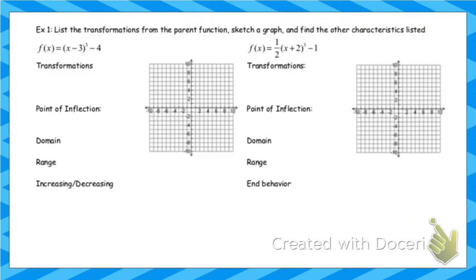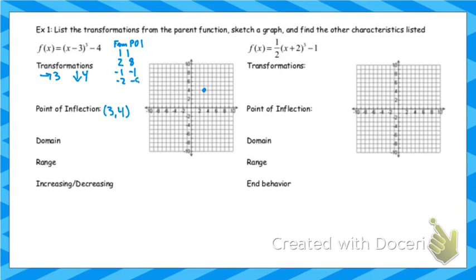Let's sketch some graphs. First, identify the transformations: this graph has gone right 3 and down 4, so the point of inflection is at (3, −4). From the point of inflection, we follow the parent function pattern: right 1 up 1, right 2 up 8, left 1 down 1, left 2 down 8. Since this graph has not been stretched, compressed, or reflected, I move from the point of inflection exactly those amounts.